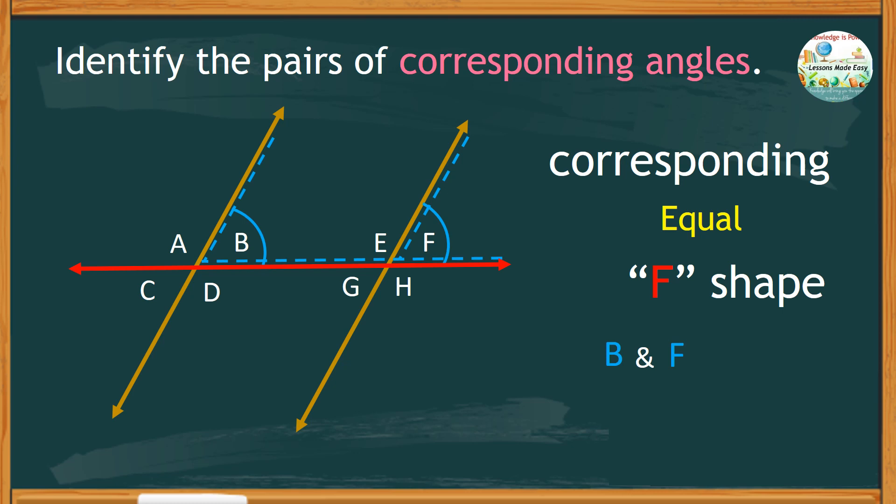On the other side of the transversal, there is an inverted F and these two angles are equal, angles A and E.